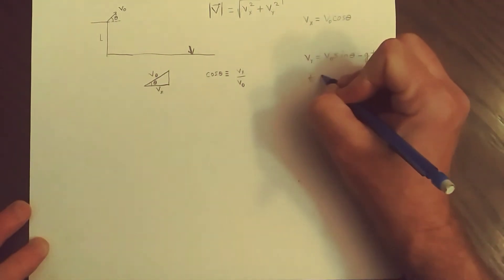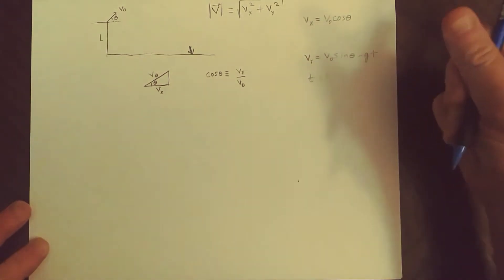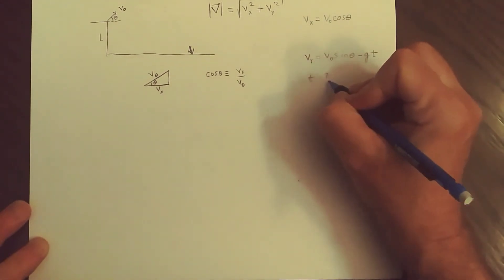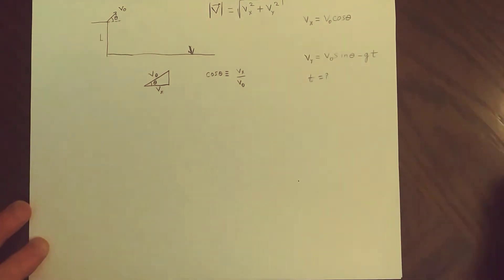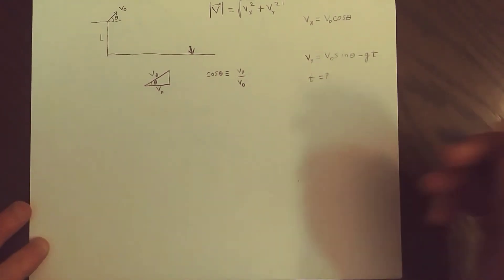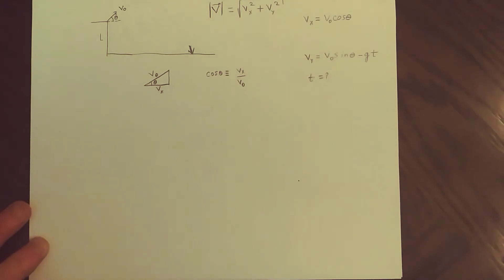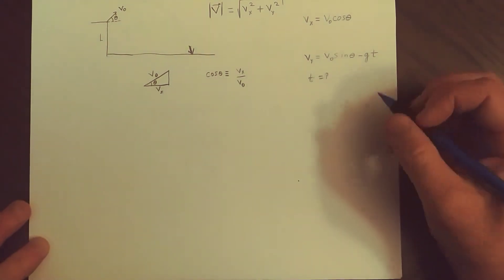But there's acceleration, the acceleration due to gravity, so we have minus GT. So we need to know T. We need to know what T is at the moment the object hits the ground and we don't have that. So that's going to force us to one of the other kinematic equations.